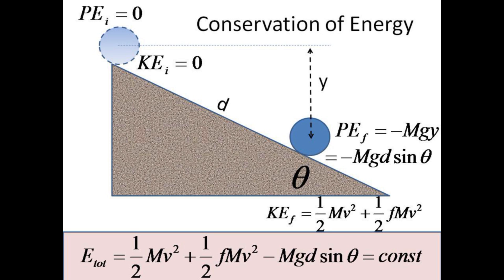d is the quantity that a motion sensor aimed down the slope will measure for position. By conservation of mechanical energy, we expect the total energy to remain constant all the way down the hill.